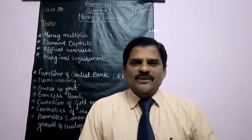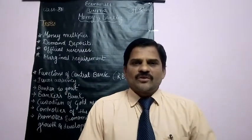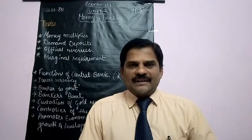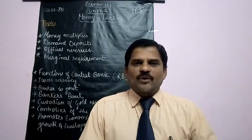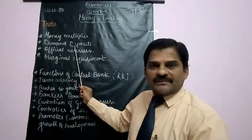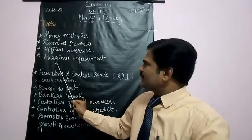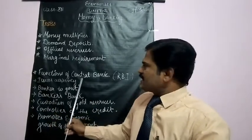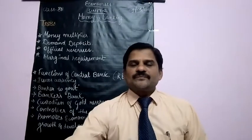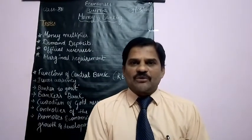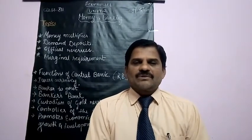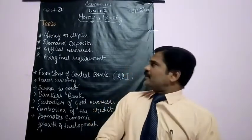Good morning students, welcome to online class. Today we are going to read Chapter 3, Money and Banking, from the book Introductory Macroeconomics. The topics we will cover today are: money multiplier, demand deposits, official reserves, marginal requirement, and functions of the central bank — that is, all six functions of the RBI. Please be attentive, as some questions from this lesson will definitely appear in board examinations.